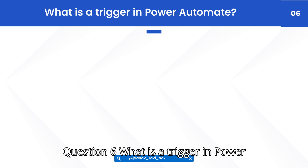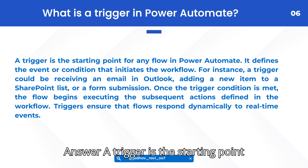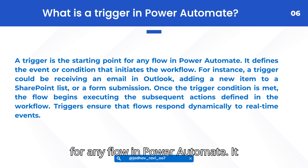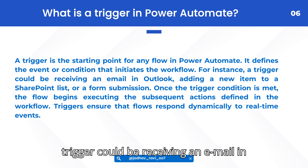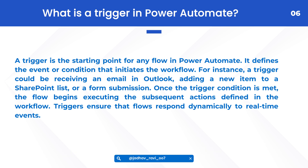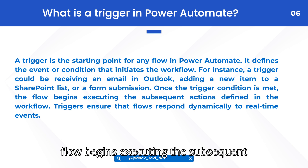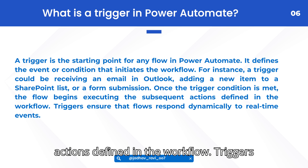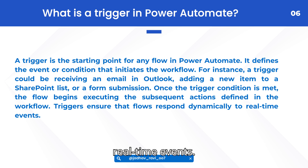Question 6: What is a trigger in Power Automate? Answer: A trigger is the starting point for any flow in Power Automate. It defines the event or condition that initiates the workflow. For instance, a trigger could be receiving an email in Outlook, adding a new item to a SharePoint list, or a form submission. Once the trigger condition is met, the flow begins executing the subsequent actions defined in the workflow. Triggers ensure that flows respond dynamically to real-time events.